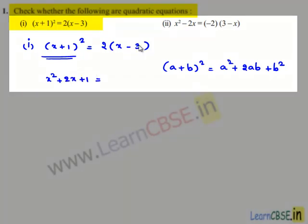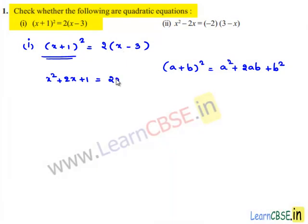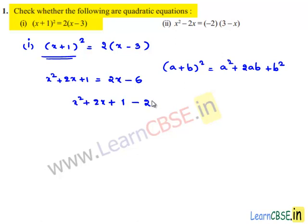On the right hand side we have 2 times (x - 3), so 2 times x is 2x and 2 times minus 3 is minus 6. Now transposing the terms on the right hand side to the left hand side, we get x² + 2x + 1, and the right hand side terms are transposed, so 2x becomes minus 2x and minus 6 becomes plus 6, equal to 0. So plus 2x and minus 2x will be cancelled.